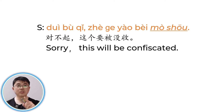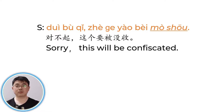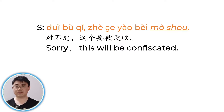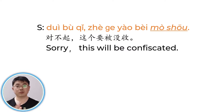对不起, 这个要被没收. 对不起 means sorry. 这个 means this. 被 is used to form the passive. This will be confiscated. That's all for today's lesson. Thank you for watching, and we will learn something new next time.